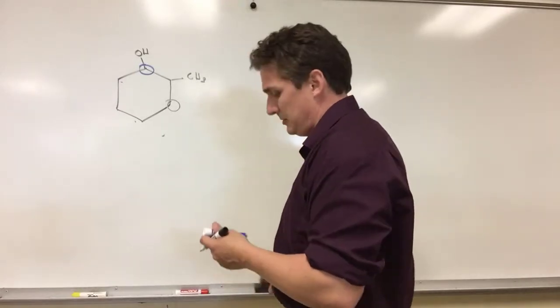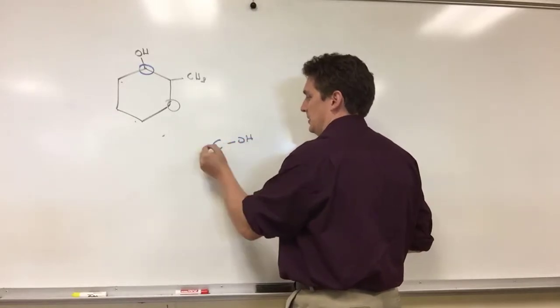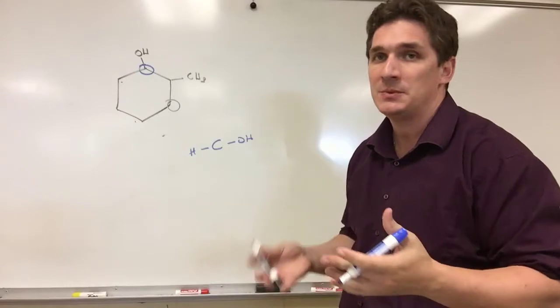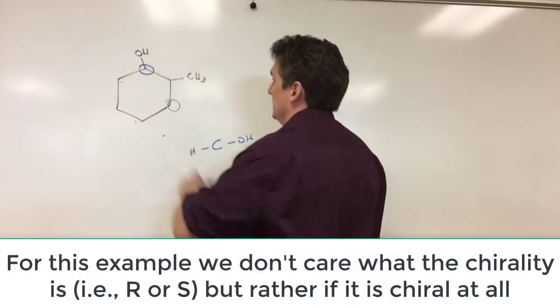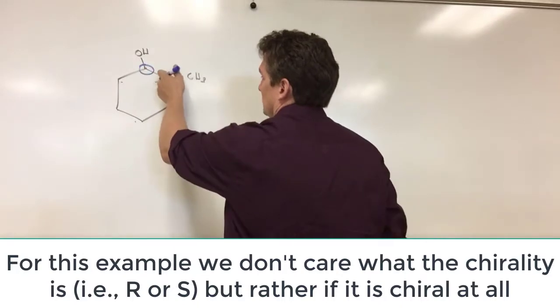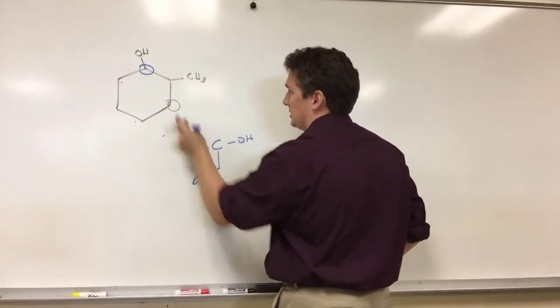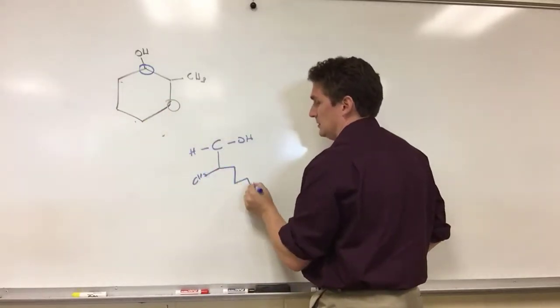Well, if we look at the blue carbon, I have an OH, and we're doing relative configurations here. So whichever side—either side you want to put the hydrogen on—for now it doesn't matter. But if we go down, we have that carbon with a CH3 group hanging off of it, and one, two, three, four more carbons.